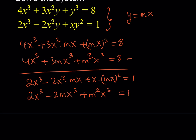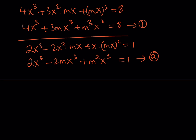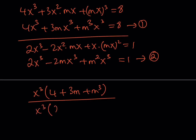Now, with these two equations, both have x cubed as a common factor. From the first equation, factoring out x cubed gives x cubed times (4 plus 3m plus m cubed) equal to 8. I'd like to divide these two equations side by side, because they both have the same x cubed factor, which cancels out. Dividing 8 by 1 gives 8, and x cubed cancels, giving a nicer equation. Cross-multiplying: 4 plus 3m plus m cubed equals 16 minus 16m plus 8m squared.